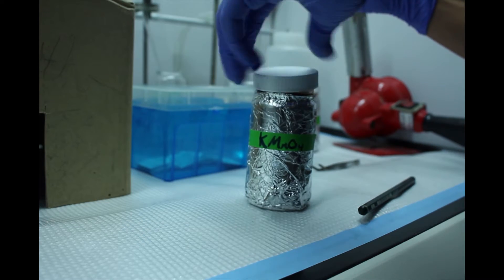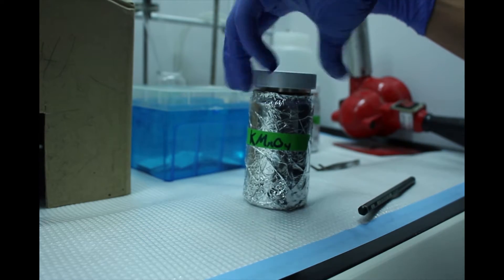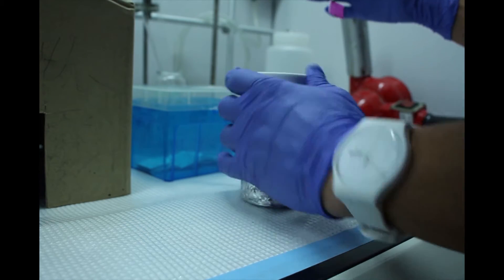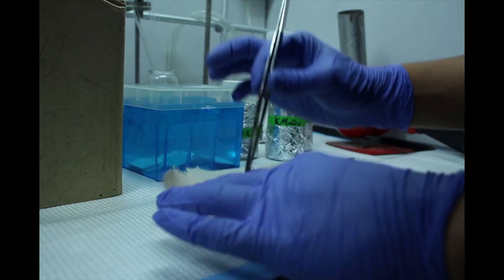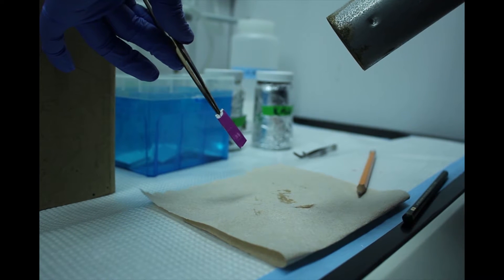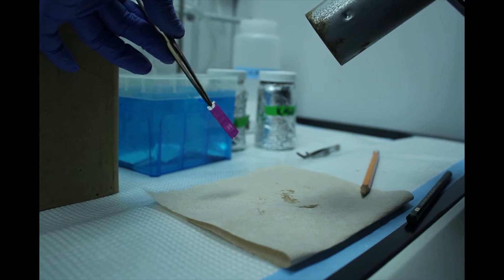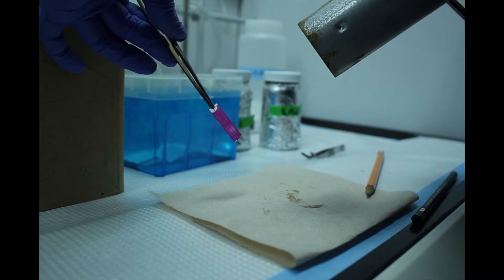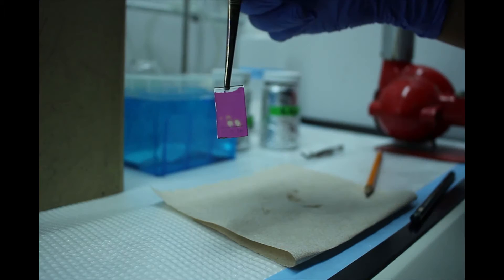Using tweezers, submerge your entire TLC plate within the potassium permanganate solution. Wipe excess potassium permanganate stain onto the paper towel and begin to heat the plate. You will see yellow and or light purple spots form. Heat the plate until you can see all of these spots clearly.